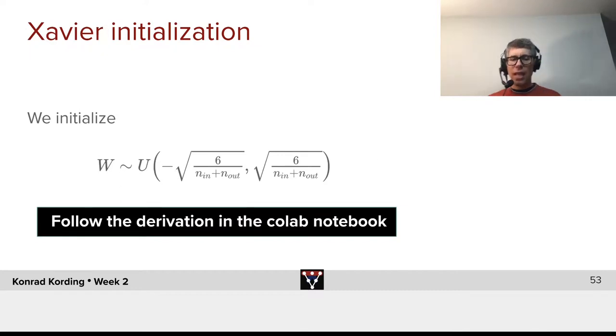So what we will now do is we will use the Xavier initialization. We will initialize the weights to be uniformly distributed in the range of plus minus the square root of six divided by n_in plus n_out, where n_in is the number of incoming and outgoing units. So follow the derivation for that in the Colab notebook. It's really quite beautiful.